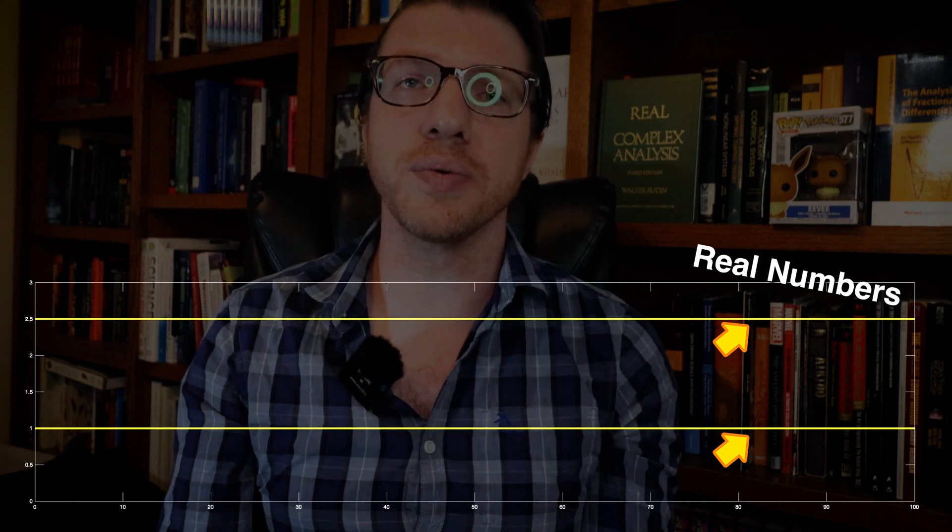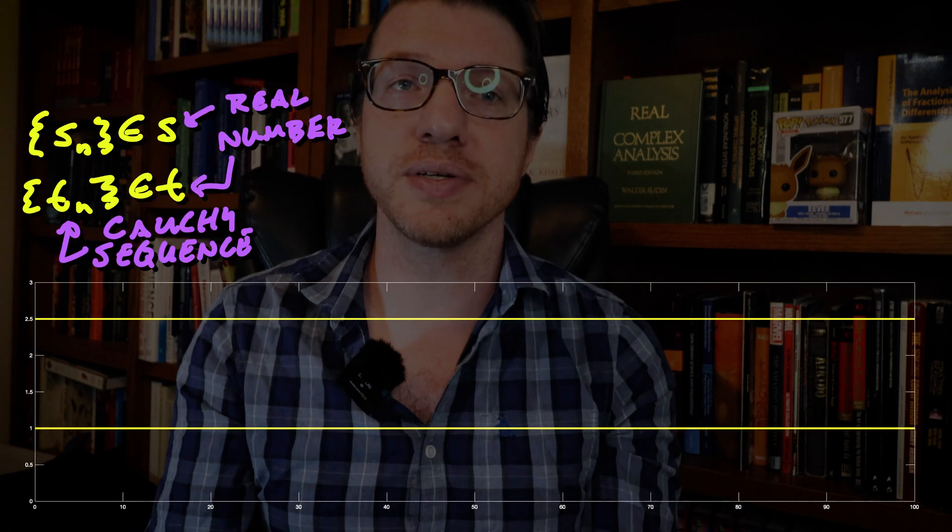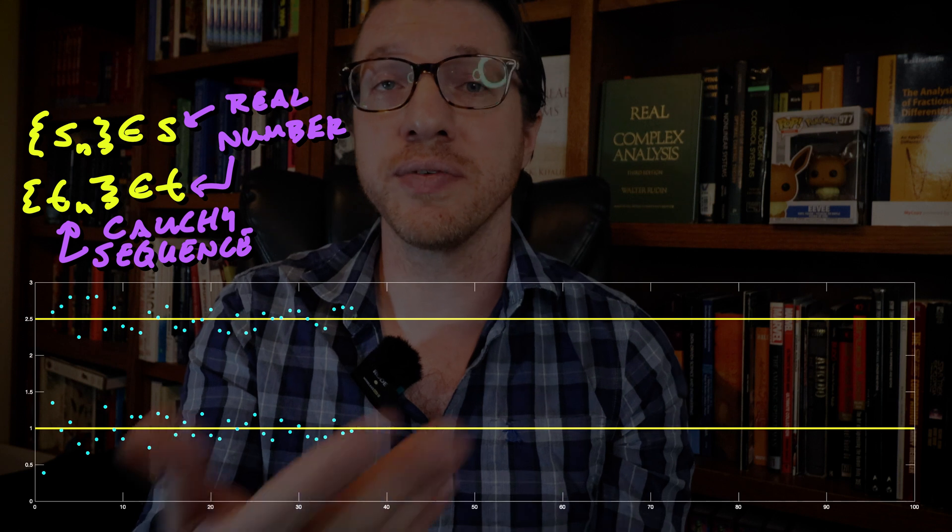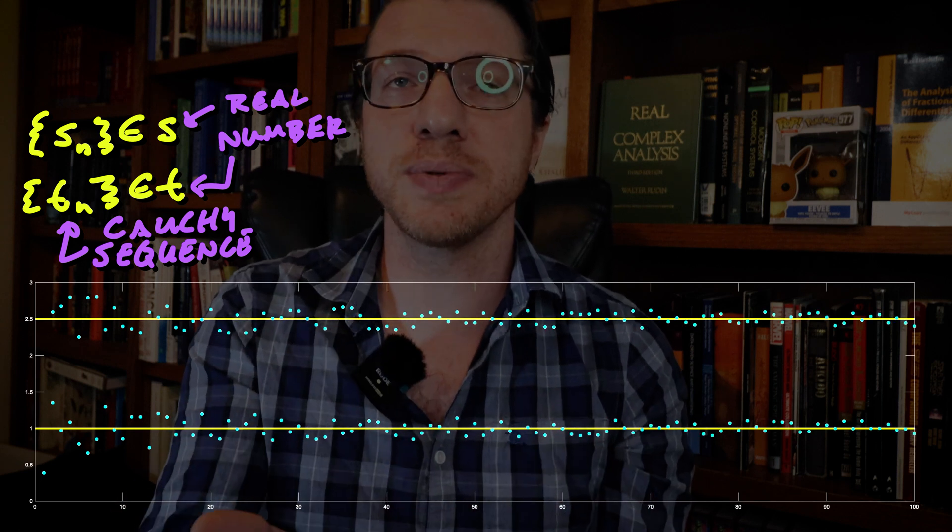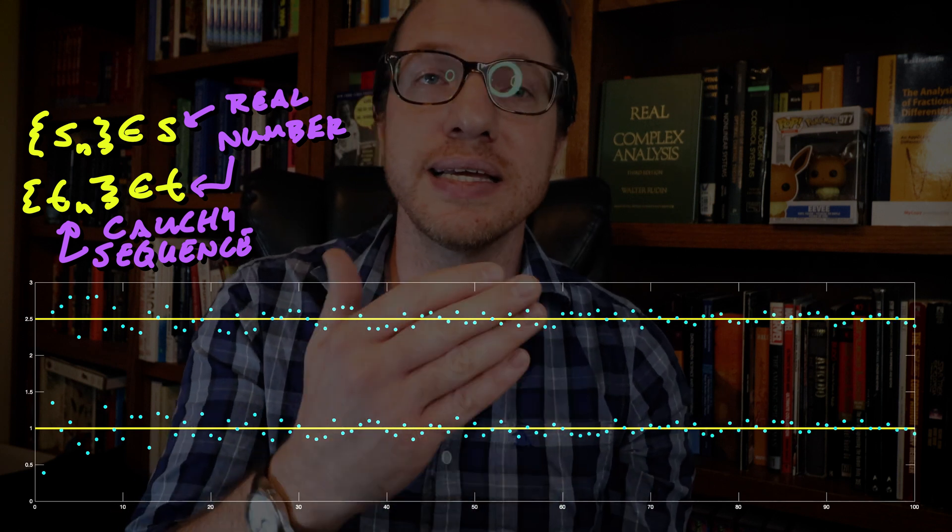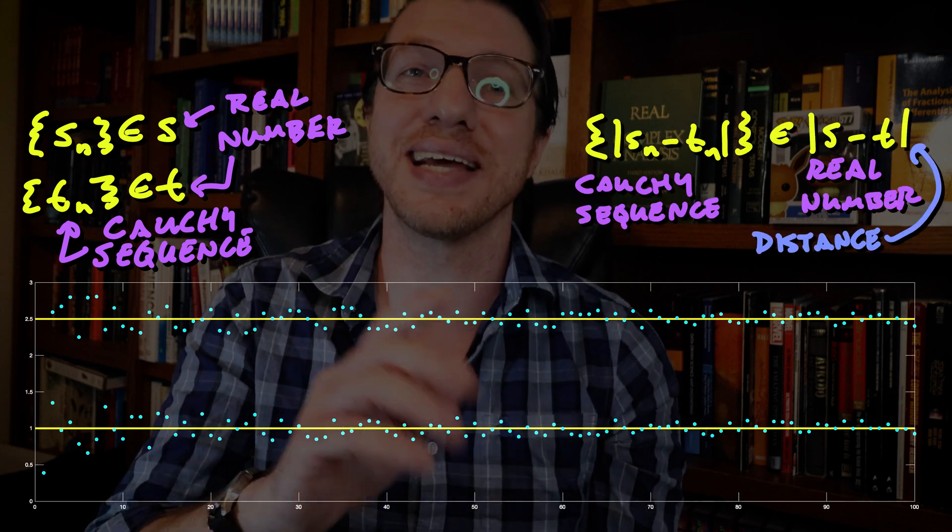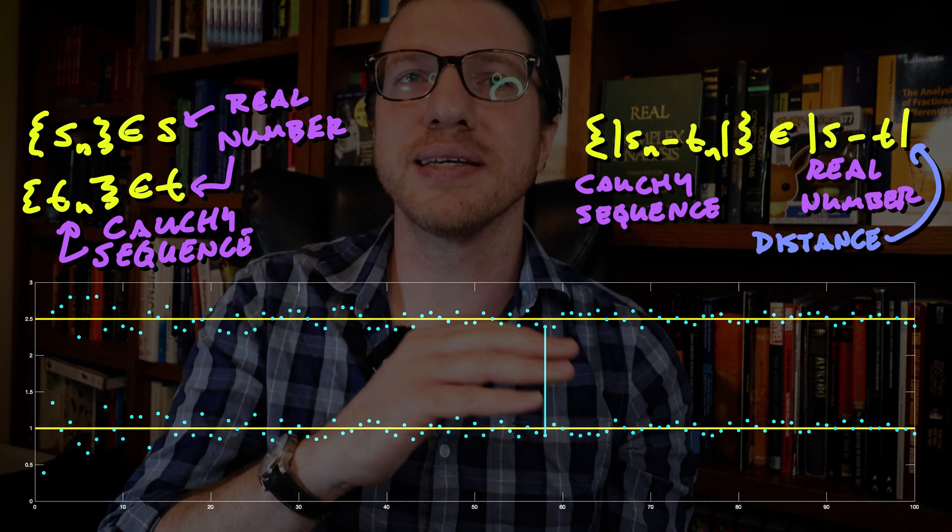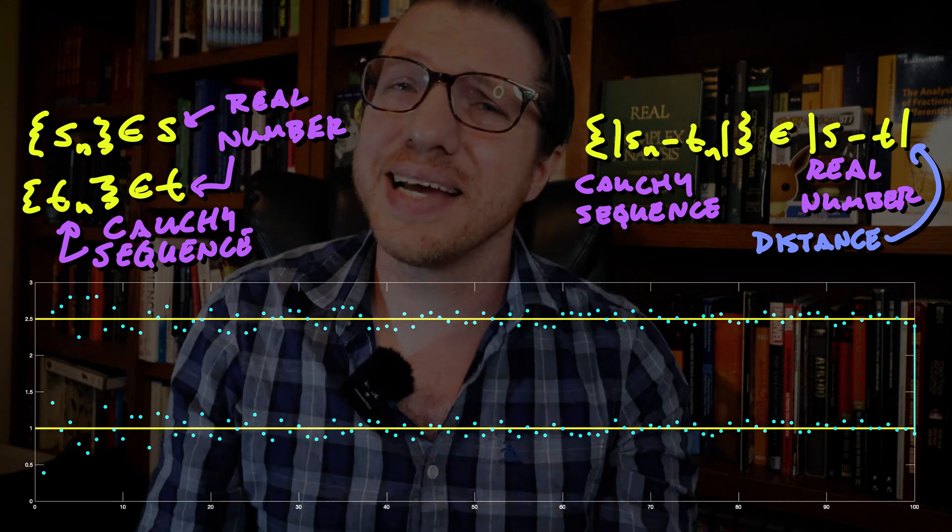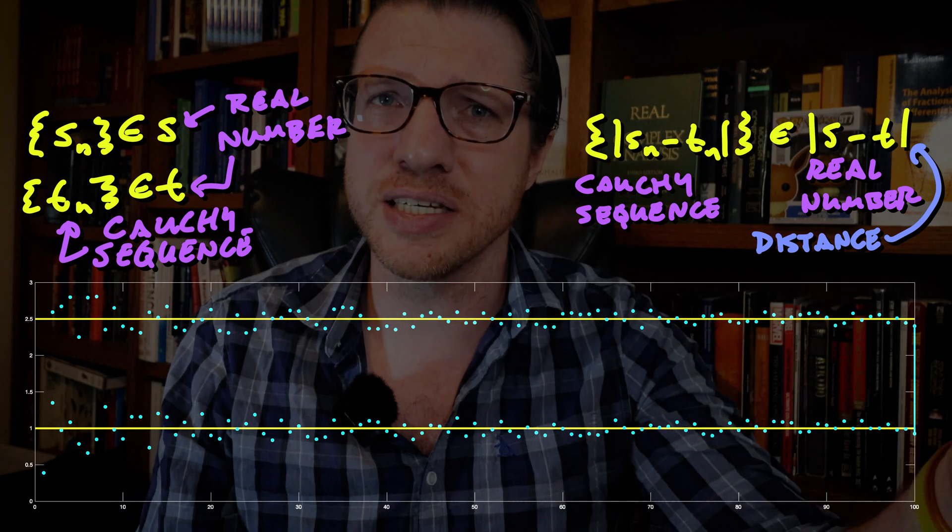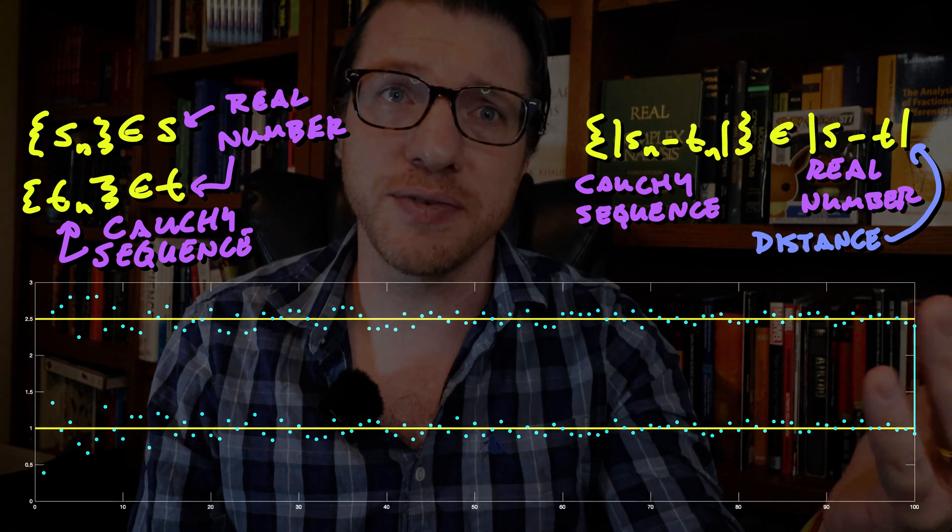Alright, now we will prove that the real numbers expressed through equivalence classes of Cauchy sequences of rational numbers has the least upper bound property. First, let's talk about the distance between two real numbers, since we haven't addressed that yet. This is pretty easy to do, since if we take two real numbers and select a Cauchy sequence from each class, then the real number that represents the distance between the two numbers is the one that contains the Cauchy sequence corresponding to the absolute value of the difference between the members of the first two sequences. Essentially, the distance between two real numbers is the limit of the distance between the members of the respective Cauchy sequences.